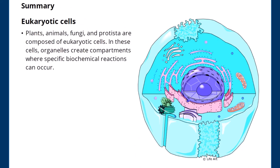Plants, animals, fungi, and protista are composed of eukaryotic cells. In these cells, organelles create compartments where specific biochemical reactions can occur.